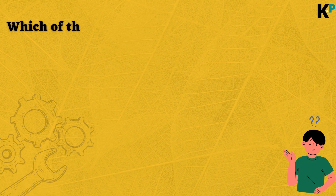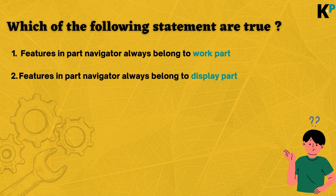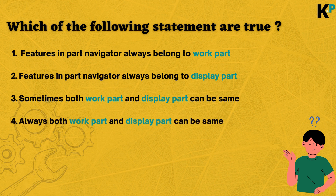Let's start with the basics in this video. Which of the following statements are true? Number one: features in Part Navigator always belong to the work part. Number two: features in Part Navigator always belong to the display part. Number three: sometimes both work part and display part can be the same. Number four: work part and display part are always the same. Many of you might get confused.